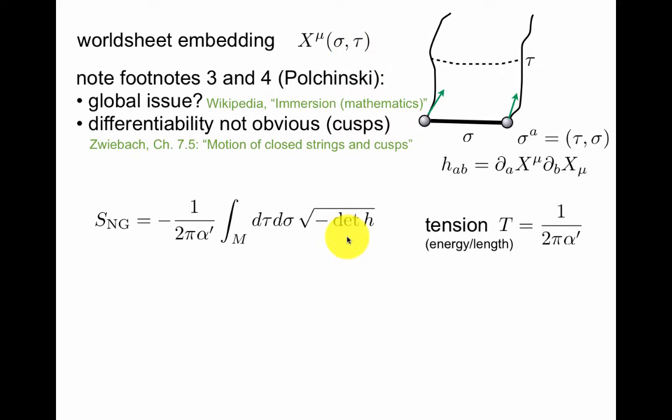You should be familiar with the idea that the square root of the minus determinant of the metric, integrated over a volume, is the volume form. Here it's an area, because it's in two dimensions.